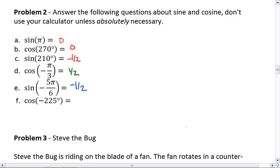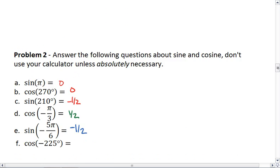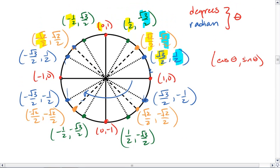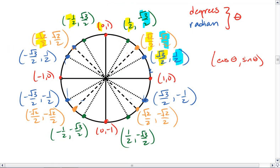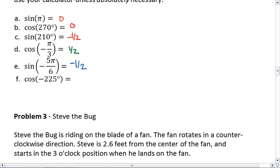And lastly, cosine of negative 225 degrees. Well, 225 degrees is normally this orange dot. But we're going to go clockwise. So that brings us up to this orange dot. And here, the cosine value is the x coordinate. That's negative root 2 over 2. And there are all your answers.